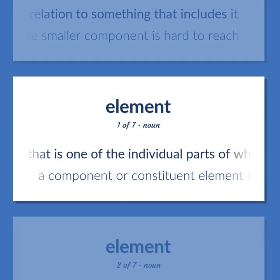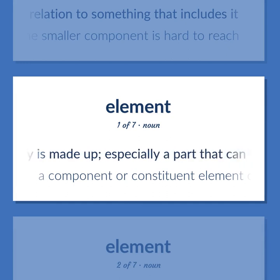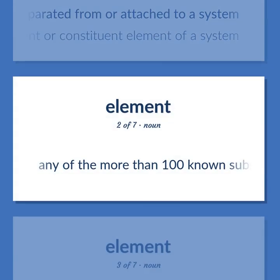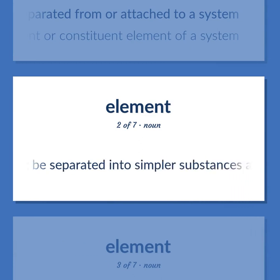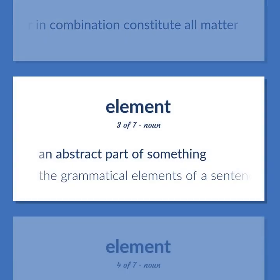An artifact that is one of the individual parts of which a composite entity is made up, especially a part that can be separated from or attached to a system. A component or constituent element of a system. Any of the more than 100 known substances, of which 92 occur naturally, that cannot be separated into simpler substances and that singly or in combination constitute all matter. An abstract part of something — the grammatical elements of a sentence.